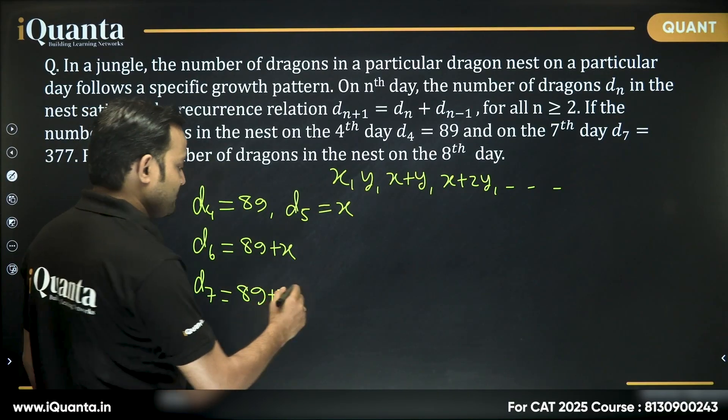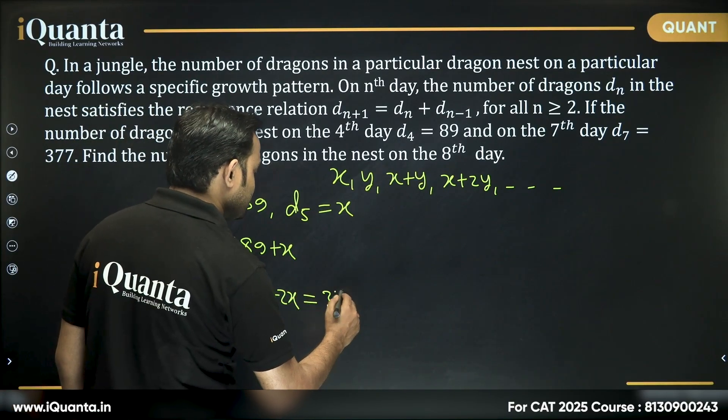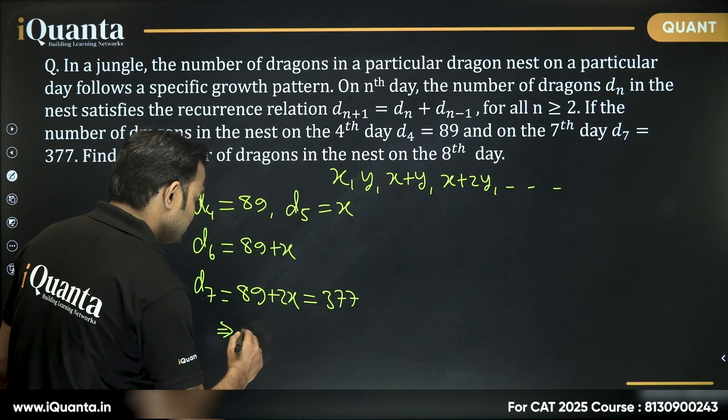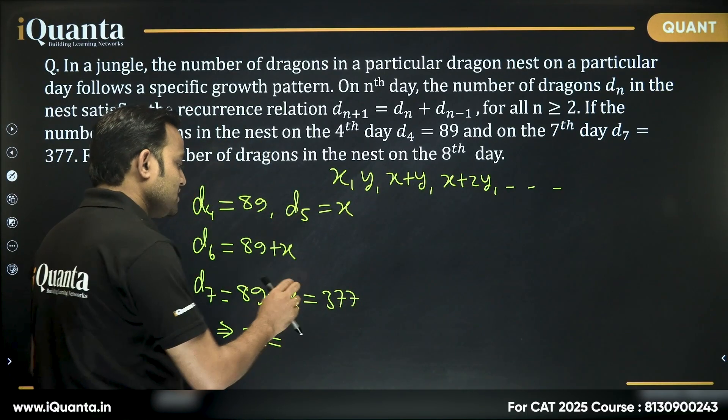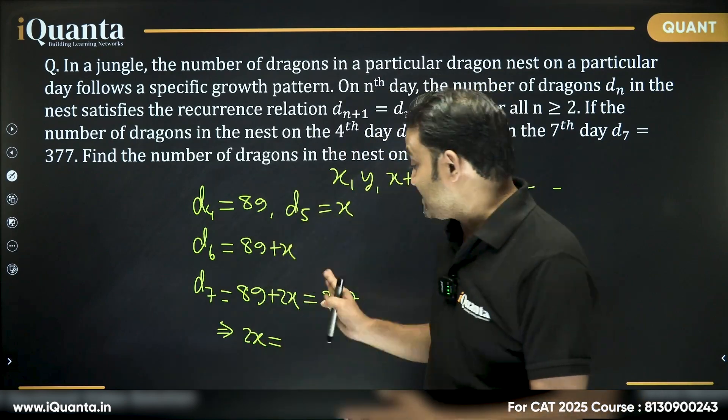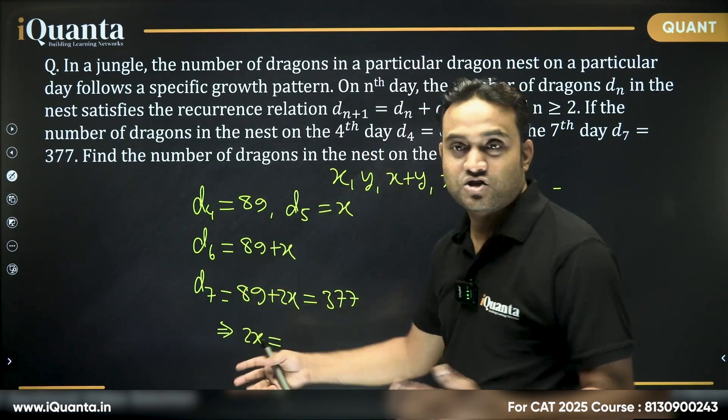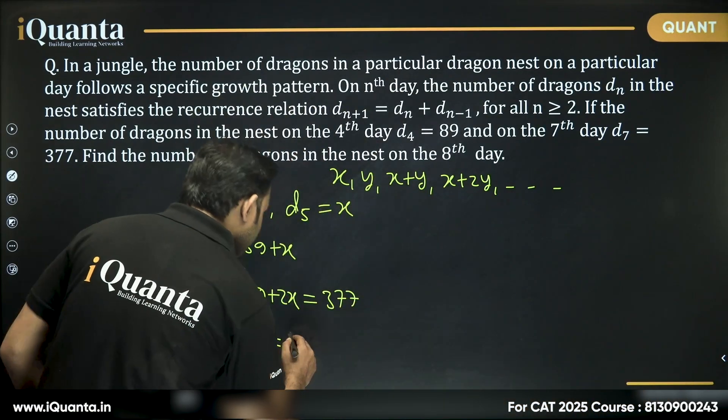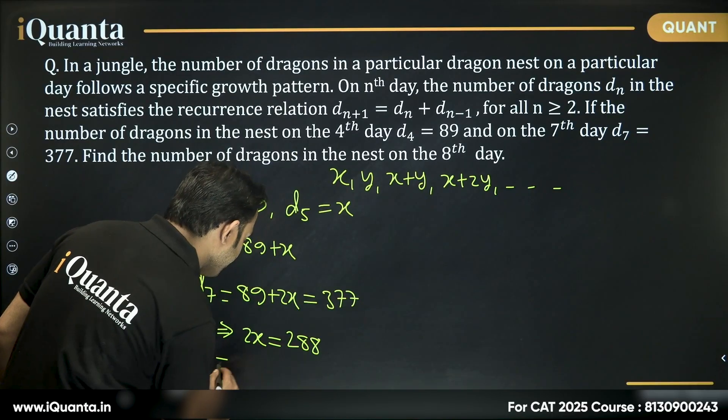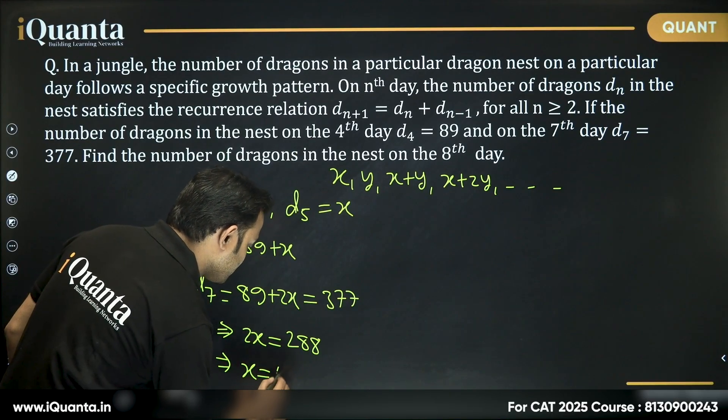Now, this value is given. What is this value? This value is 377, or can we say that 2x is equal to 377 minus 89... 288. So, 2x is equal to 288 or we can say x will be equal to 144.